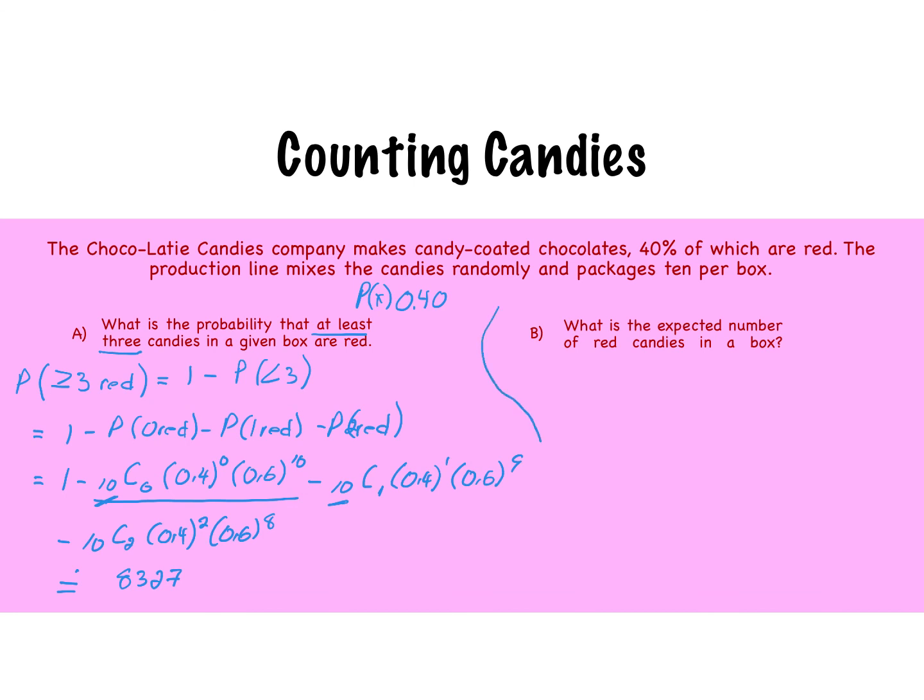Now what is the expected number of red candies in a box? And for this the expected value is the number times its probability. So we have 10 as our number and our probability of 0.4, so we are going to expect 4 red candies in our box.